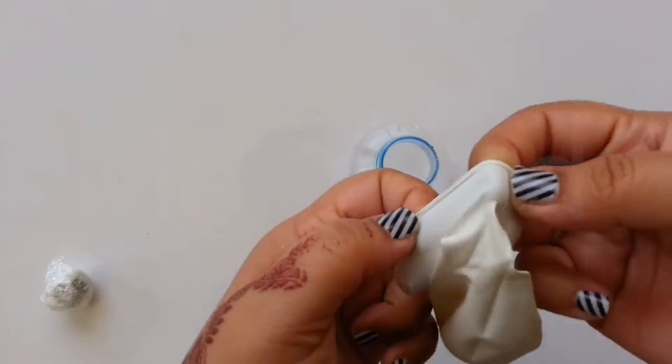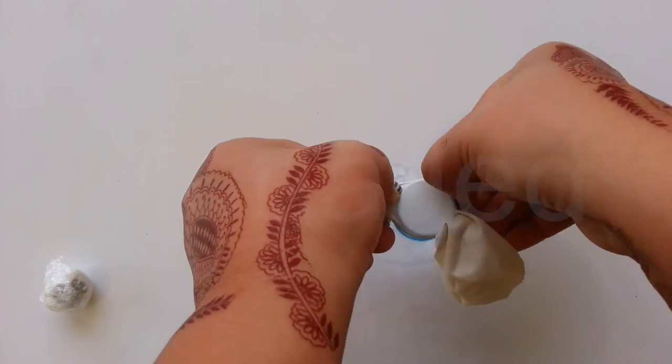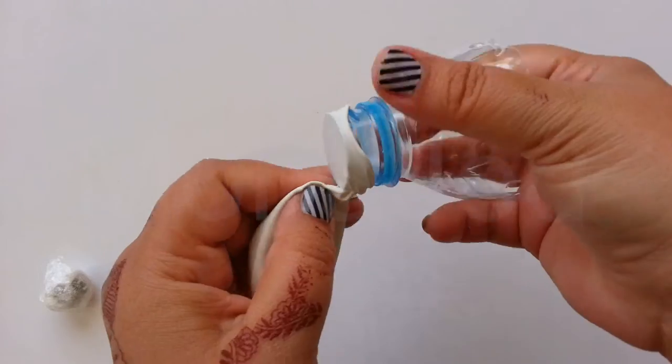So you have to prep the balloon for filling by blowing it up and releasing the air. Then stretch the balloon opening over the top of the plastic bottle funnel. Make sure it is secure and snug.